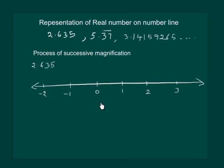We have 2.635 which will surely lie between 2 and 3. So let us divide 2 and 3 into 10 equal parts.